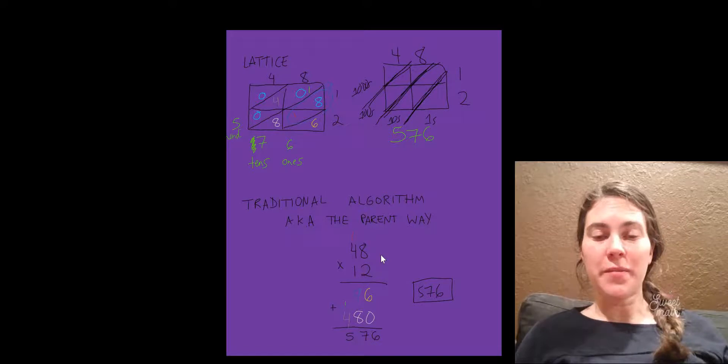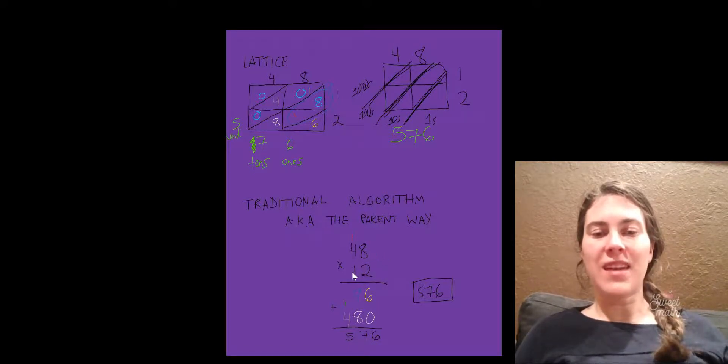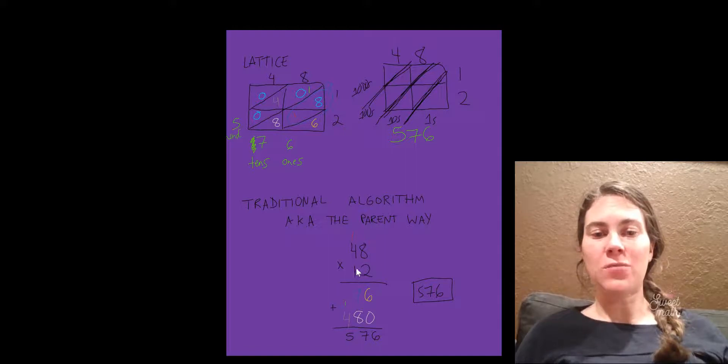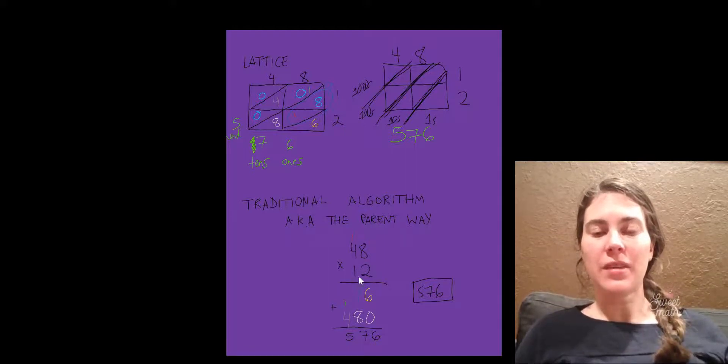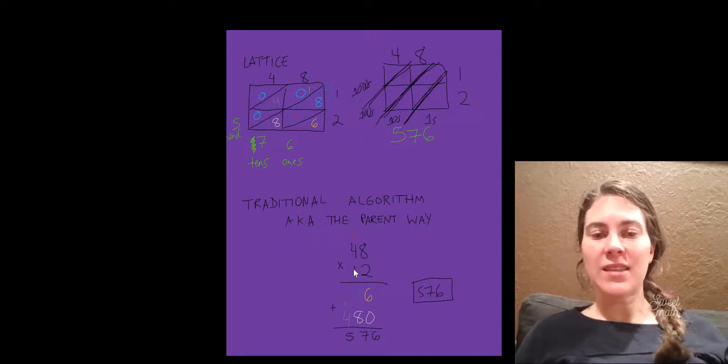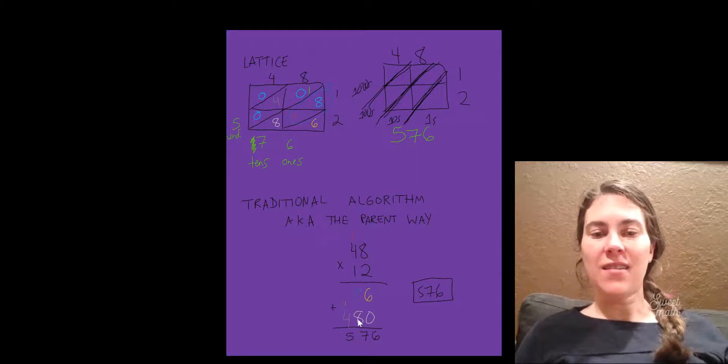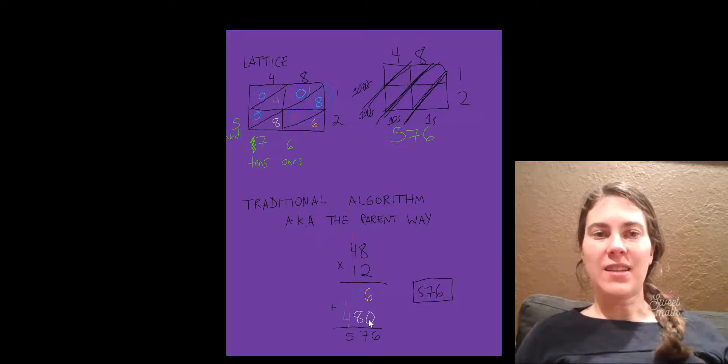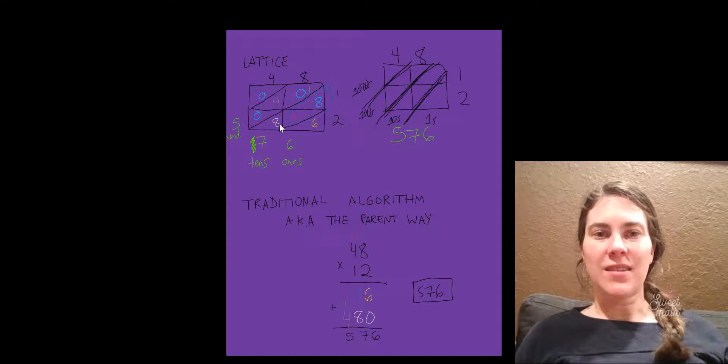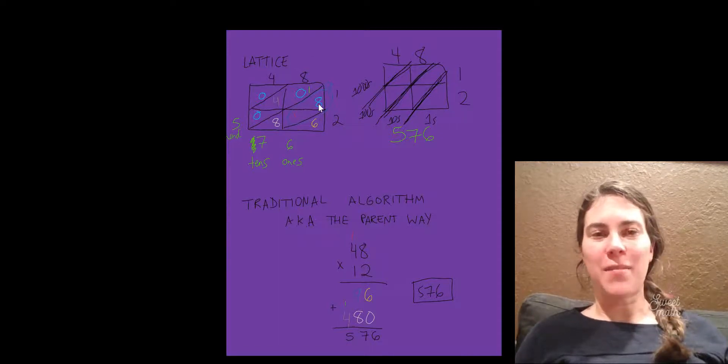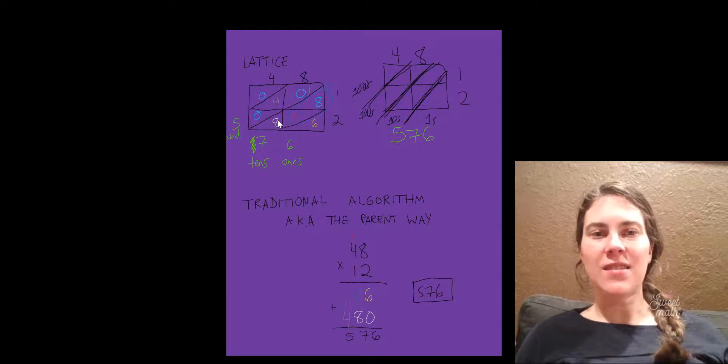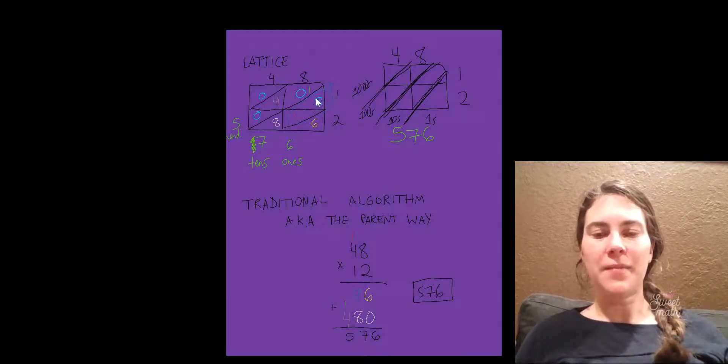The next thing we do in the traditional algorithm is we do 8 times 1, which is really 8 times 10, because this 1 is the 10 in 12. So 8 times 10 is 80. It's the same as, oh I accidentally got my 8s backwards, but 8 times 10, the 8 times the 10 is 80. This is the 10's column, 80.